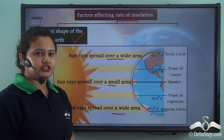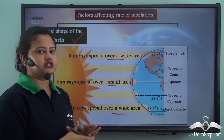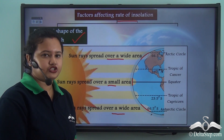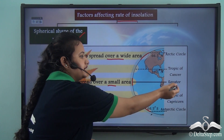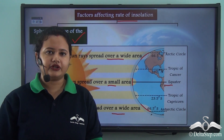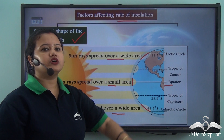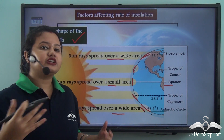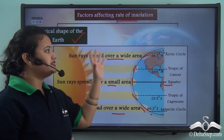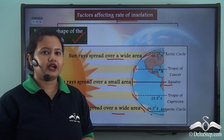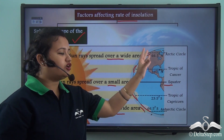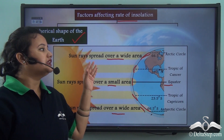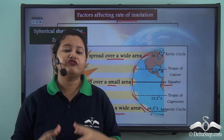In the equatorial region the sun's rays are concentrated, so the rate of insolation is higher there, and due to this the equatorial region has higher temperature. As we move towards the poles, the scattering of the sun's rays increases — the sun's rays are spread over a wide area. Due to this, the rate of insolation received at higher latitudes decreases, and as a result higher latitudes have lower temperature.